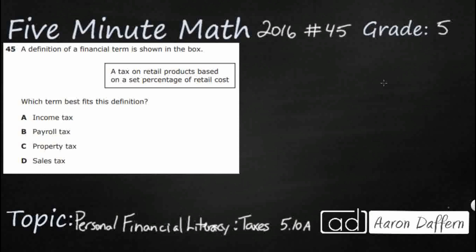So, we have a whole bunch of different taxes here, and we need to see which of these types of taxes — income, payroll, property, or sales tax — matches this definition: a tax on retail products based on a set percentage of retail cost. This word 'retail' looks to be important because it shows up twice, but let's define each type of tax and see which one best fits.